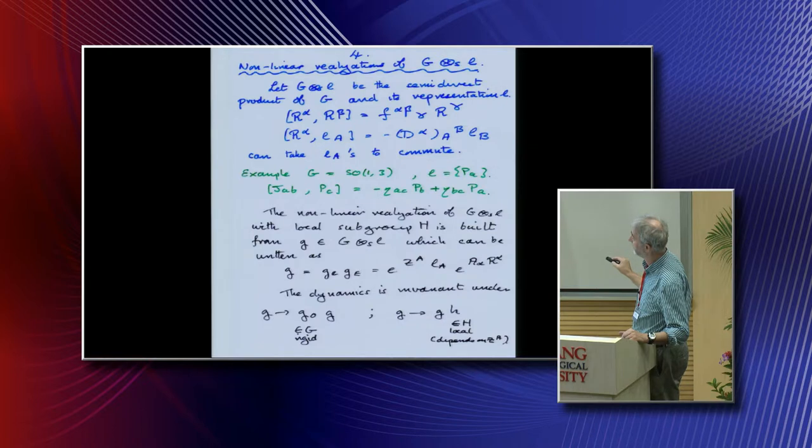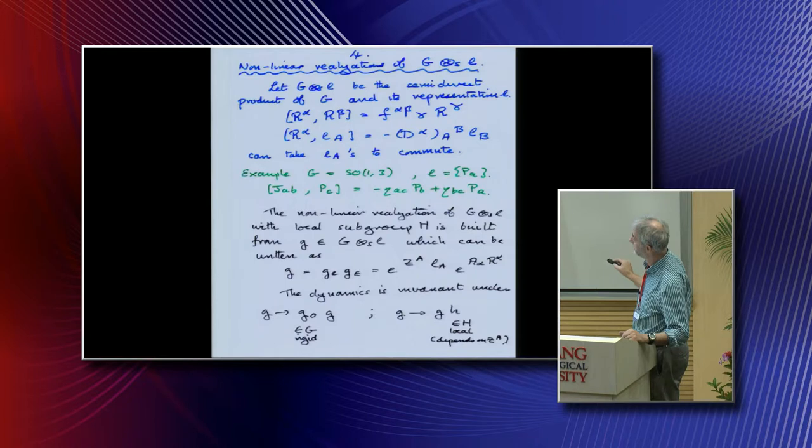What is the non-linear realization? It's just the thing that's invariant under these transformations. On the left you act with G0, a group element that's rigid so it doesn't depend on coordinates. On the right you act with an H, the preferred subgroup, and this element here does depend on the coordinates. This transformation H turns up here, so you can get rid of some of these A's.